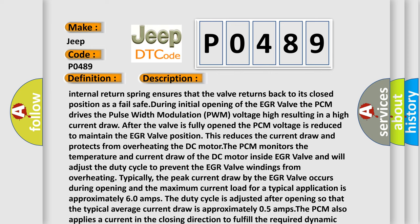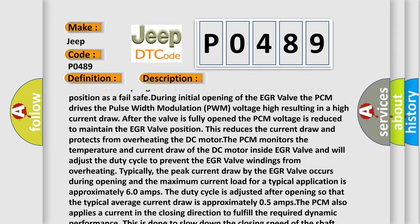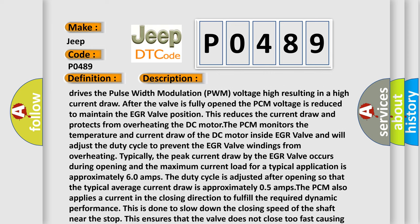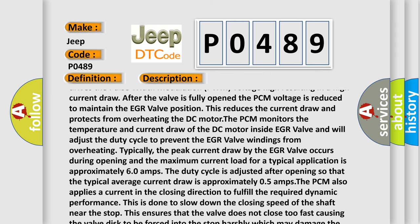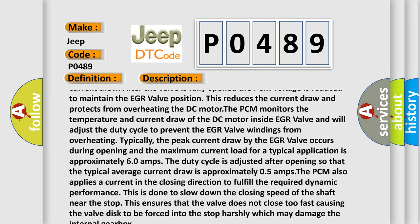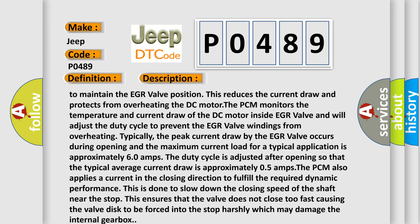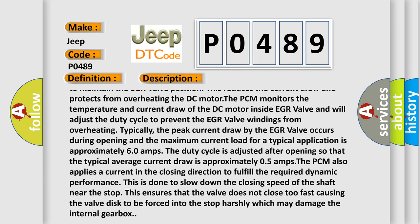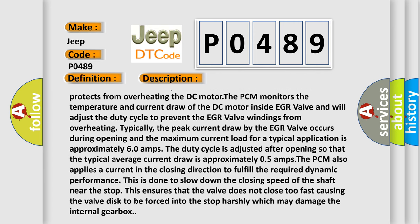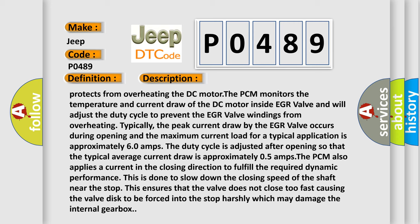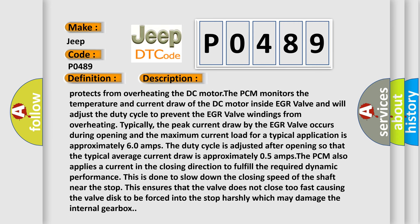The PCM monitors the temperature and current draw of the DC motor inside the EGR valve and will adjust the duty cycle to prevent the EGR valve windings from overheating. The peak current draw by the EGR valve occurs during opening, and the maximum current load for a typical application is approximately 60 amps. The duty cycle is adjusted after opening so that the typical average current draw is approximately 0.5 amps. The PCM also applies current in the closing direction to slow down the closing speed of the shaft near the stop, ensuring the valve does not close too fast and damage the internal gearbox.